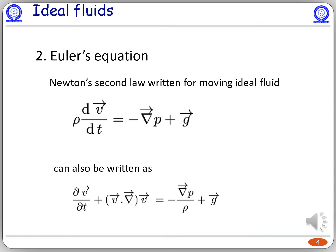Euler's equation is the force equation or Newton's second law written for moving ideal fluids. The first term on the right-hand side is the force due to the gradient of pressure inside the fluid, and the second term is because of gravity. Using calculus identities, Euler's equation can also be written as del v by del t plus v dot grad v equals minus gradient of p by rho plus g.